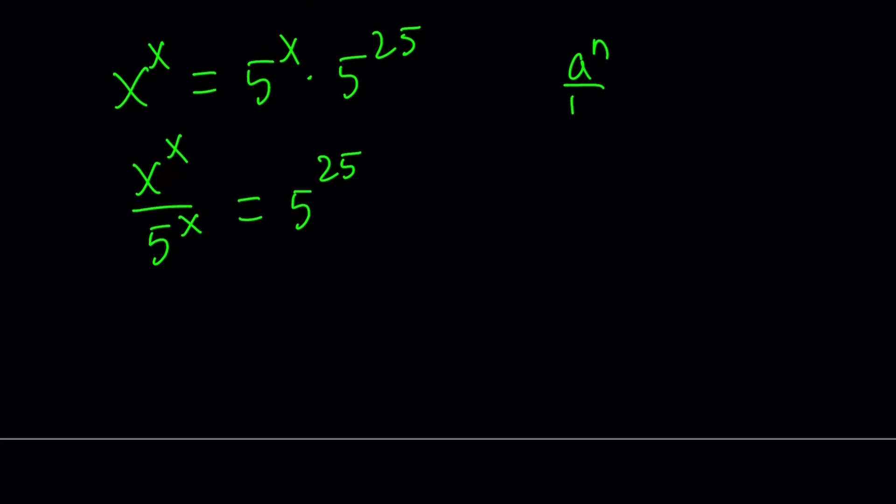So, we can write them with a common exponent like this. If you have a to the n over b to the n, by the way, n doesn't have to be an integer, you can write this as a over b to the power n. Make sense? So, that's what we're going to do here. We're going to write this as x over 5 to the power x equals 5 to the power 25. Again, that's a large number. We don't care what it is. It's just a constant.